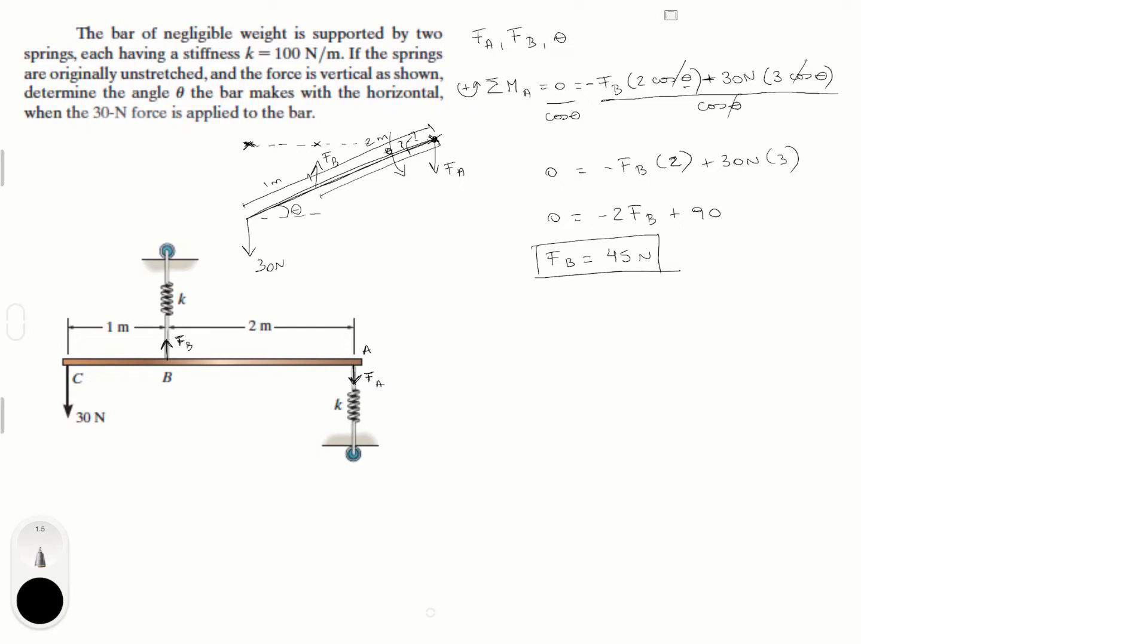Now we have one of the forces. We know that it's easy to find the other one by doing sum of the forces at Y equals zero, and that is equal to minus 30 plus F_B minus F_A. But we already have F_B, so if we plug that in and we solve we're going to get that F_A is equal to 15 newtons.